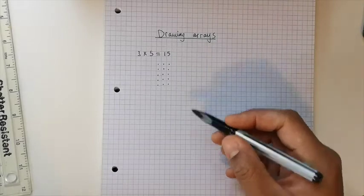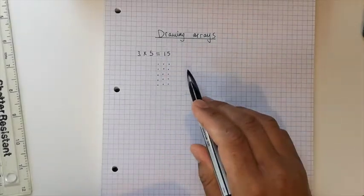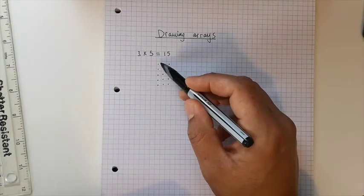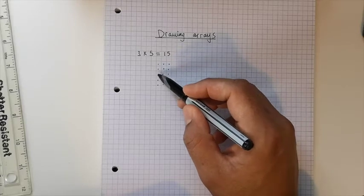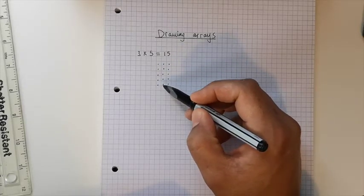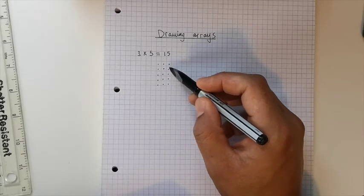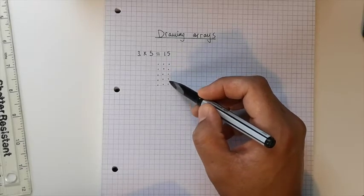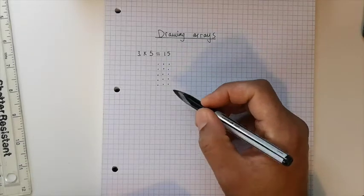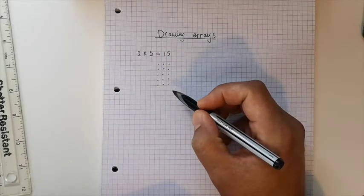And counting in fives is much quicker than me counting in ones: one, two, three, four, five, six, seven, eight, nine, ten, eleven, twelve, thirteen, fourteen, fifteen. Can you see how much longer that took?